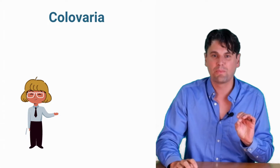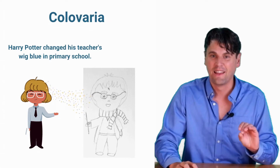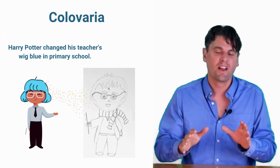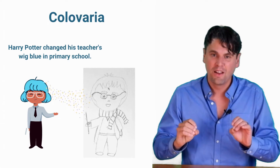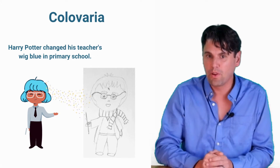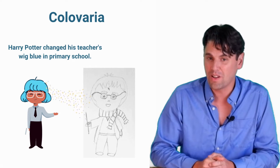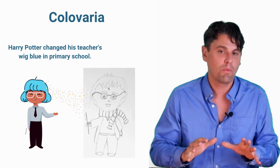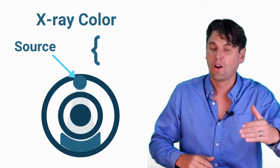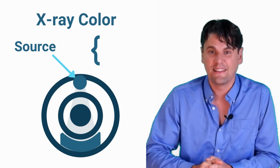The first spell I'm going to talk about is Colvaria. Harry Potter used this spell to change the color of his teacher's wig to a vivid blue. The wig is now reflecting more blue, and your eye senses more blue — this is actually a change in the energy of the visible photons reaching your eye. In the same way, if we change the energy on your x-ray system — either produced or detected — that's how we can generate dual energy CT images.